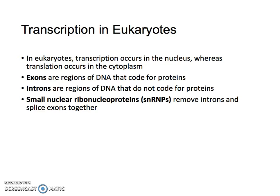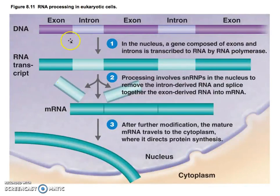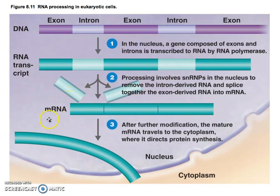That's not to say that introns are absolutely pointless — there's a lot of research going on about what they do. However, for making proteins, we don't really use them, so we have these SNRPs that go through and remove those bits. So these are our coding regions and these are non-coding regions. Our SNRPs go through and cut those out, and then this mRNA goes outside the nucleus.